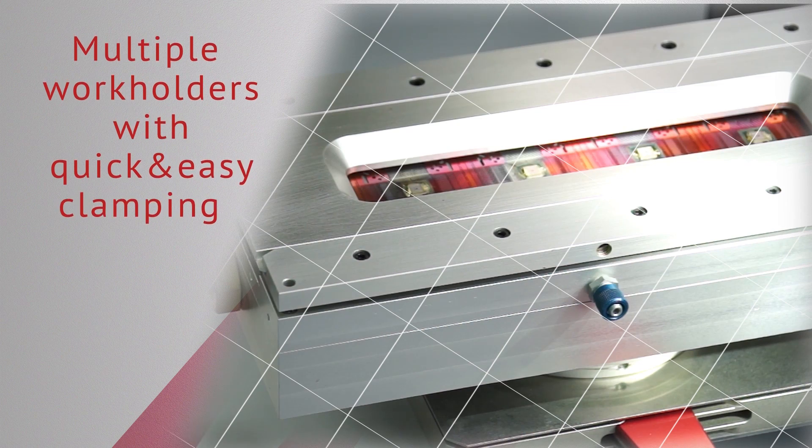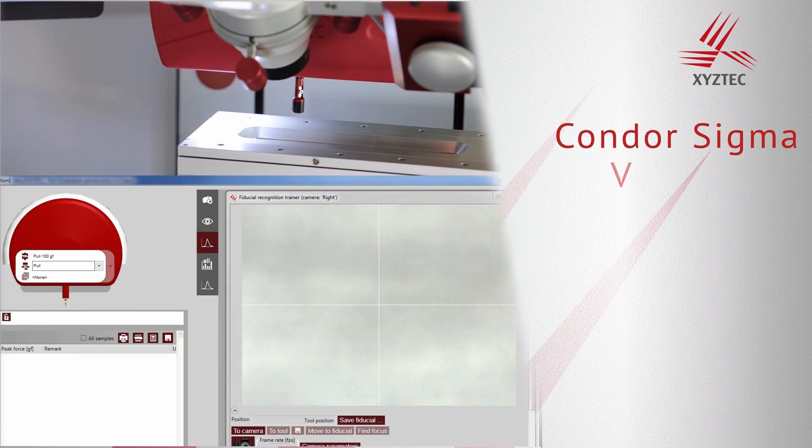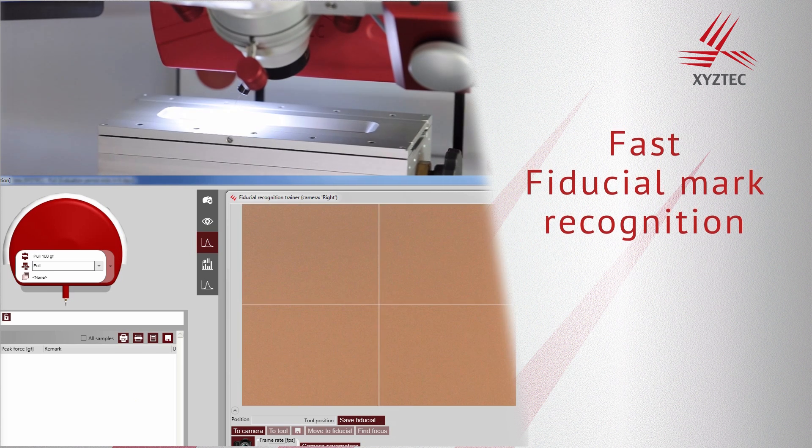The Sigma is equipped with a professional vision system. It is optimized for fast fiducial mark recognition. The vision system removes operator influence and it will correct the positional errors.